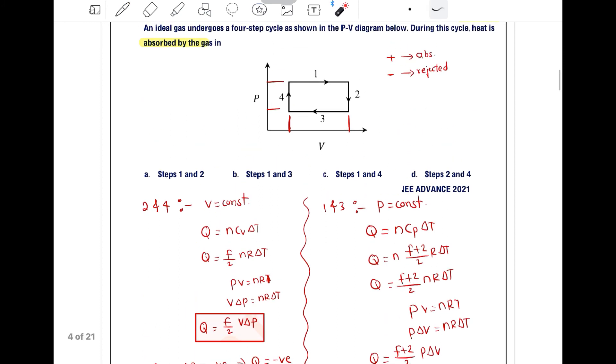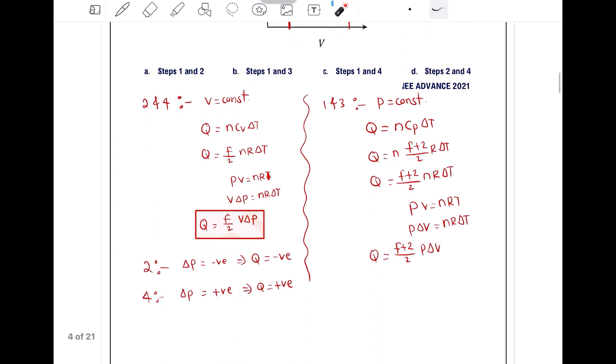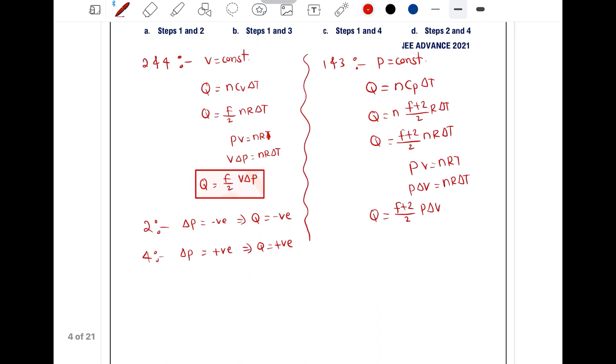In process 1, volume is increasing, while in process 3, volume is decreasing. So in process 1, ∆V is positive, so Q will be positive. In process 3, ∆V is negative, so Q will be negative.